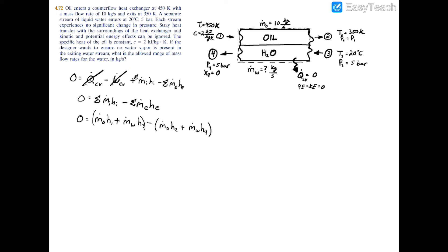plus m dot w and this is going to be h4 for exit 4. The next thing I'm going to do is factor out an m dot o and an m dot w, and if you do you can simplify these equations into zero equals m dot o times h1 minus h2 plus m dot w times h3 minus h4.